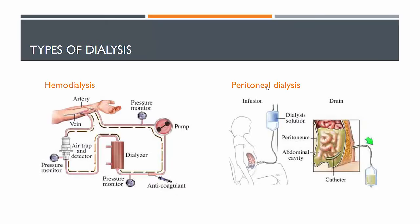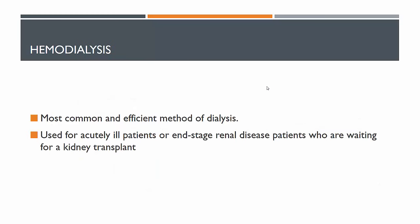There are two types of renal dialysis. The first is hemodialysis, which we'll focus on most, and then there's peritoneal dialysis. Hemodialysis is the most common and most efficient method, used largely to treat people with end-stage renal disease. The word 'renal' is associated with kidney. It can also be used for acutely ill patients who may have some sort of toxic shock in the kidneys and need their blood filtered without putting stress on the kidneys.